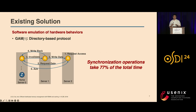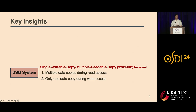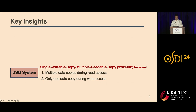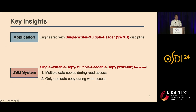So reducing these synchronization operations could significantly enhance performance. But how do we achieve this? Those complicated synchronizations are just trying to maintain one property — we call it the single-writable-copy, multiple-readable-copy invariant. It means that while multiple copies of data may exist for reading, only one writable copy can exist if data is being modified. As long as this invariant is maintained, we can have a coherent DSM. However, today's DSM systems all aim to uphold this invariant solely at the system level, overlooking very important application-level semantics.